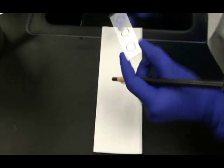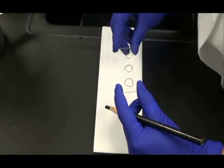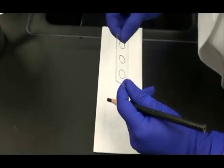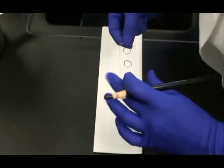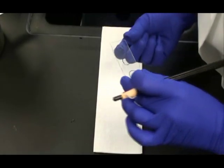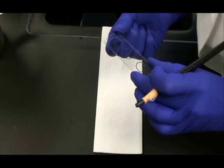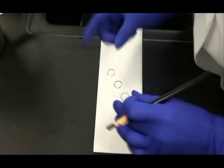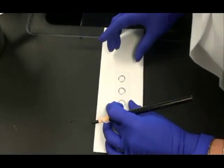The center circle is for the unknown and the two outside circles are for the controls. It's a good idea to flip that slide over so the wax is on the bottom. Then it won't mix with my bacterial sample and it's an easy way for me to tell which side is up.